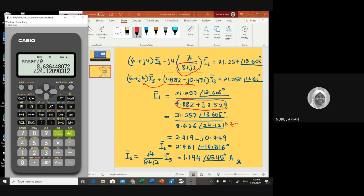Next, you need to divide 21.257 at angle 13.605 degrees. Just put in brackets 21.257, then shift to get the angle sign, and then 13.605. Divide by answer - answer is the one we calculated earlier - and press equals. You have 2.419 minus j0.449.